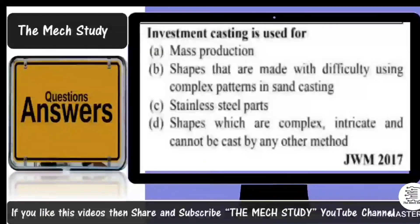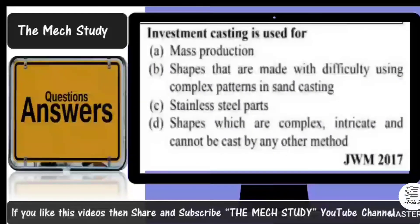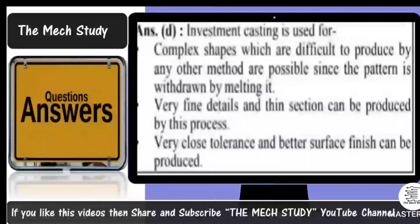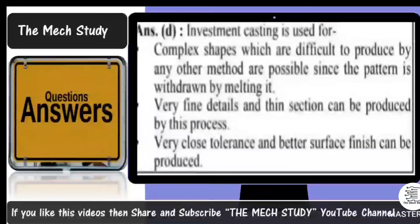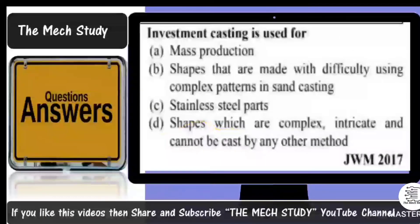Next question: investment casting is used for — option A: mass production; option B: shapes made difficult using complex patterns inside casting; option C: stainless steel parts; option D: shapes which are complex and can't be produced by other methods. Investment casting is used for very complex shapes difficult to produce by other processes. The pattern is withdrawn by melting, very fine details and thin sections can be produced, and very close tolerances with better surface finish are achievable. Hence option D is correct.